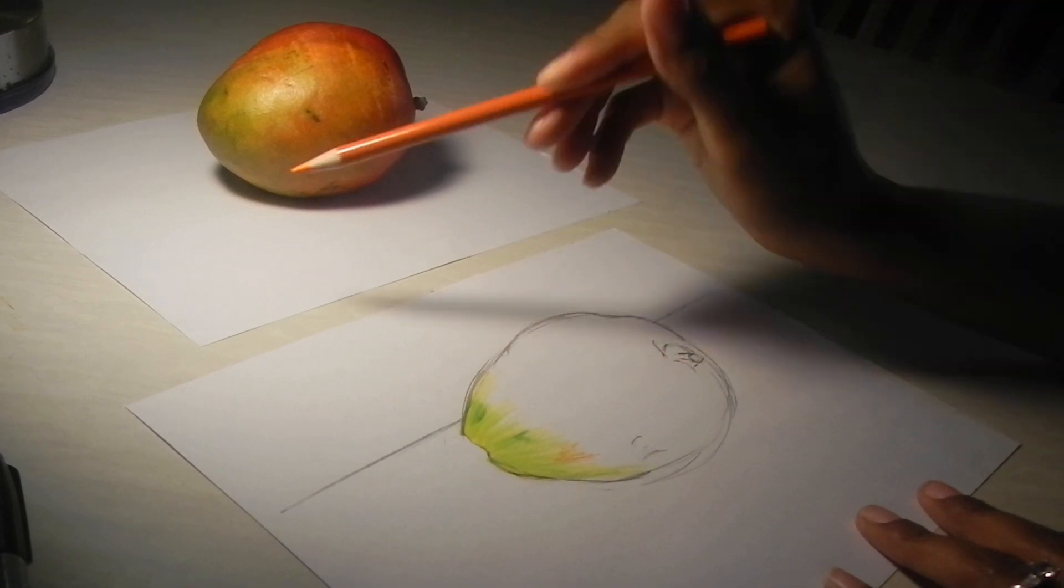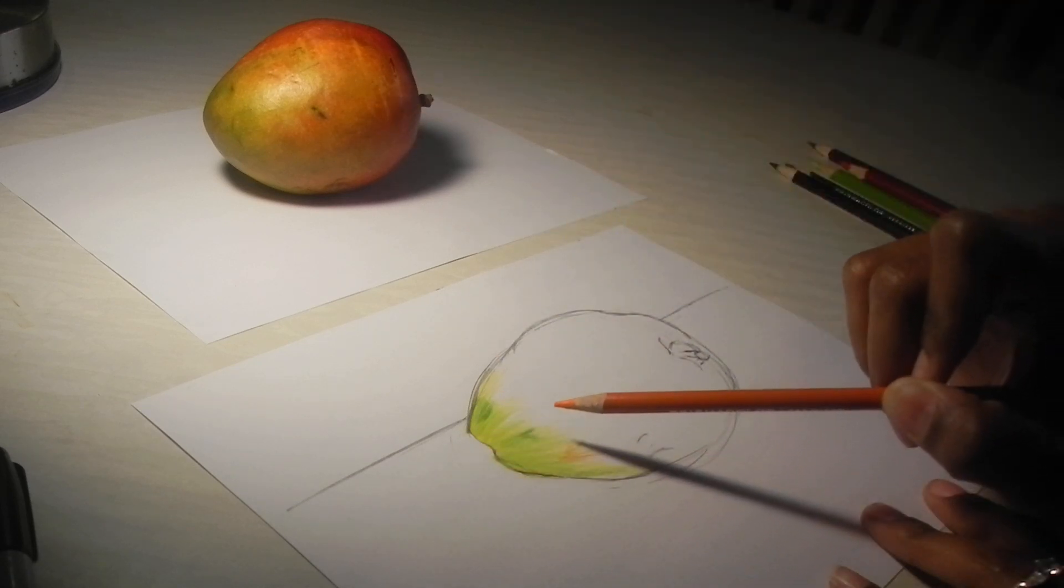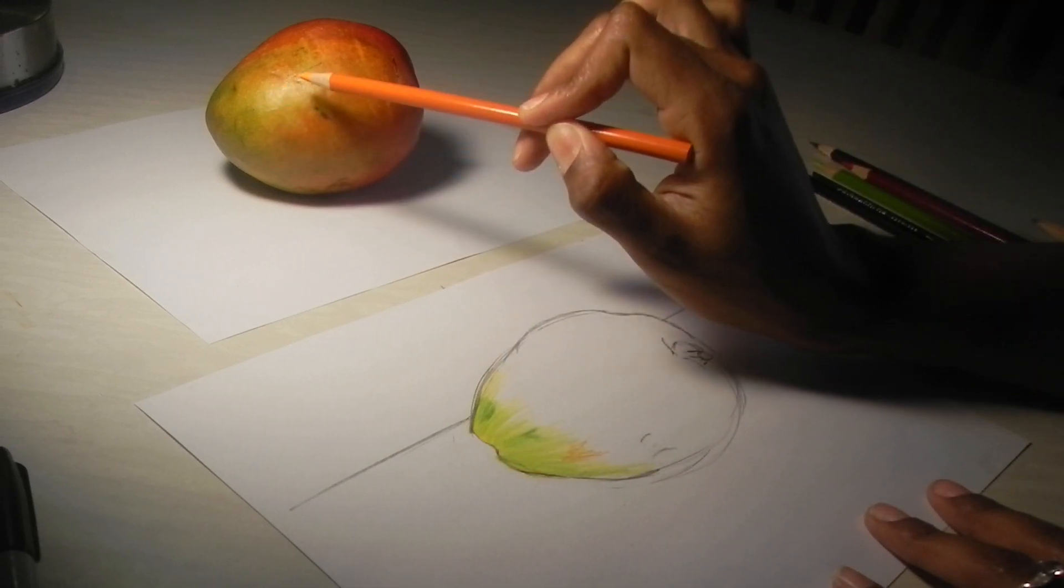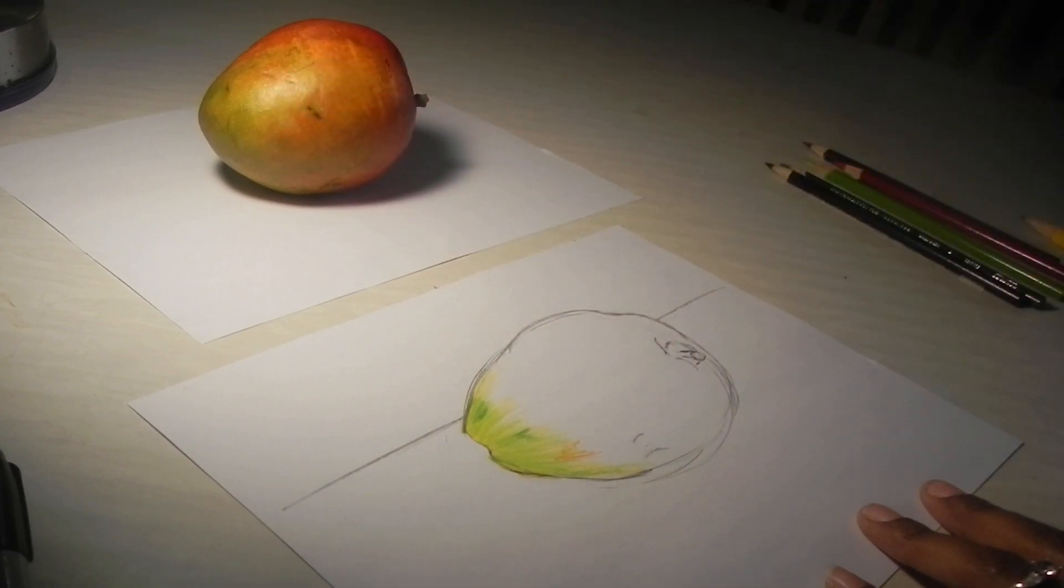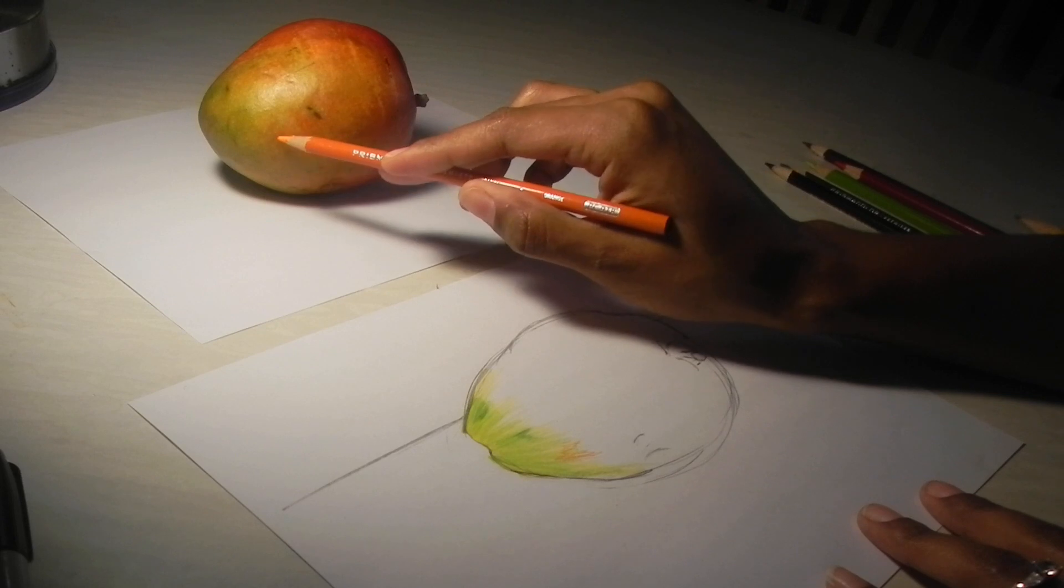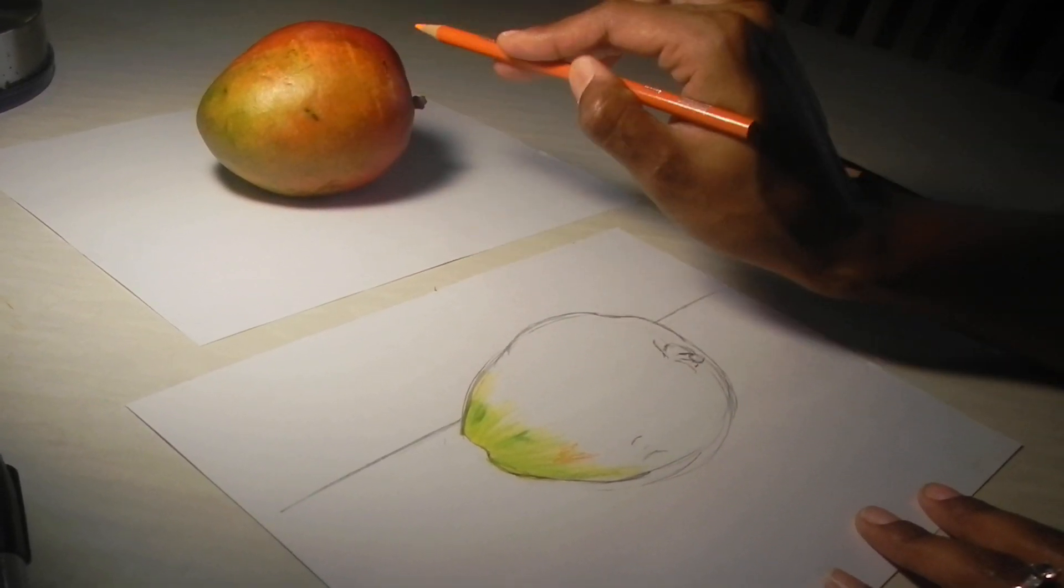So I already started here with the basic mango shape. Do it in pencil, get the outline and put your table line in. So you can see I've added the green values, the green and yellow values that are at the bottom of the fruit there. And now I'm going to start to bring in the orange tones, and the orange and the yellow tones, and then the red tones.